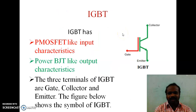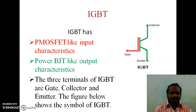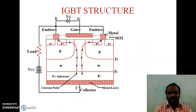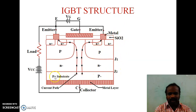IGBT has input characteristics like MOSFET and output characteristics like power BJT. IGBT has three terminals. The names of the three terminals are Gate, Emitter, and Collector. This is the cross-sectional structure of IGBT. In the cross-sectional structure of IGBT, we have two junctions, J1 and J2, and the following layers.